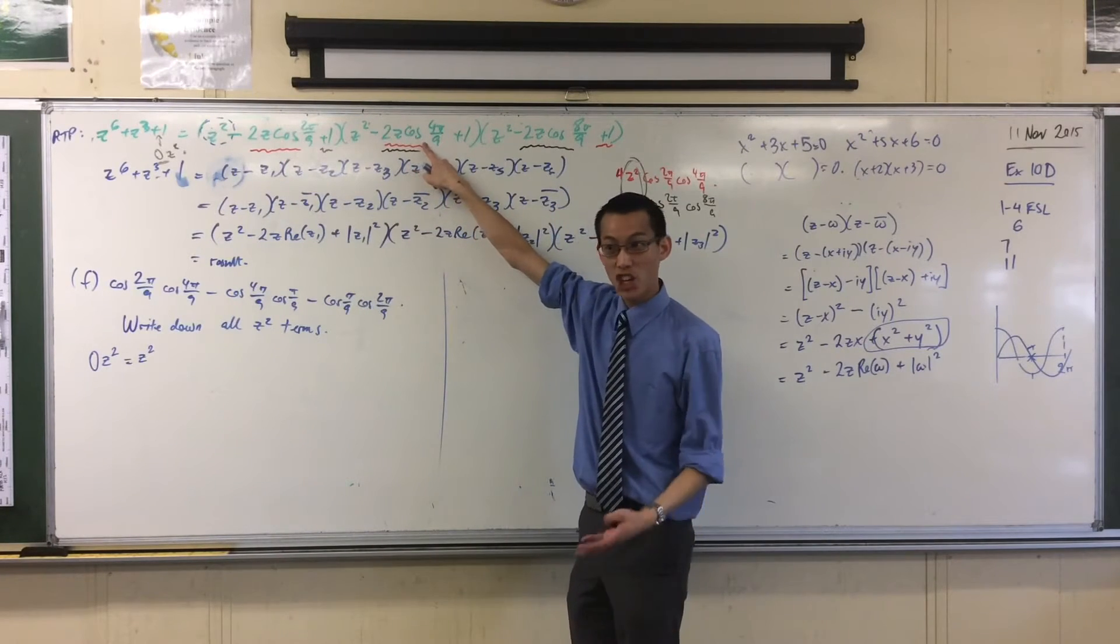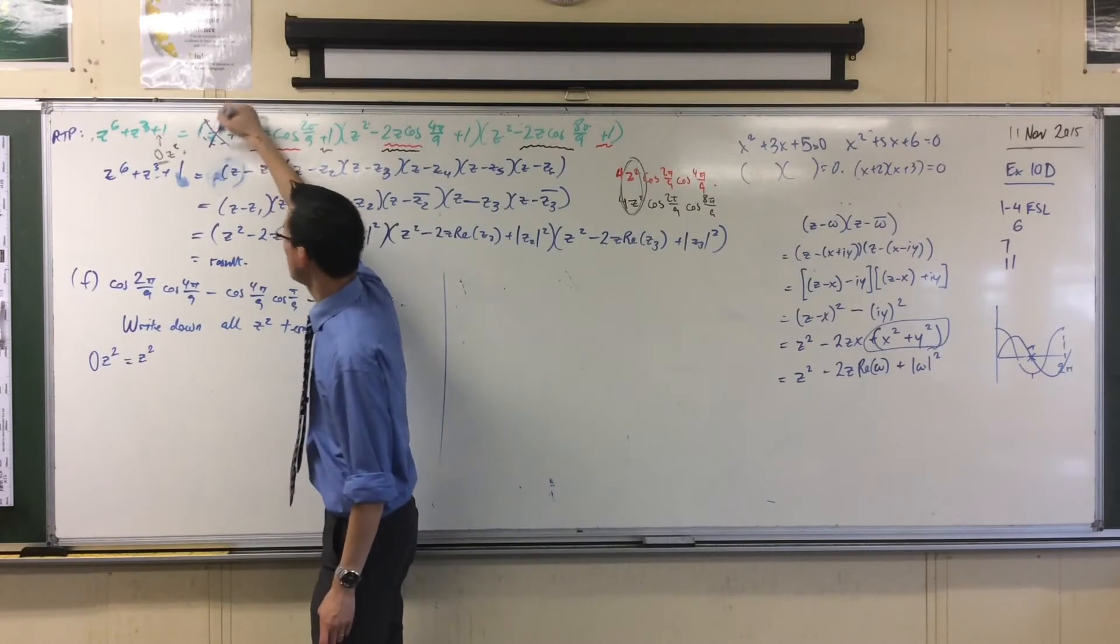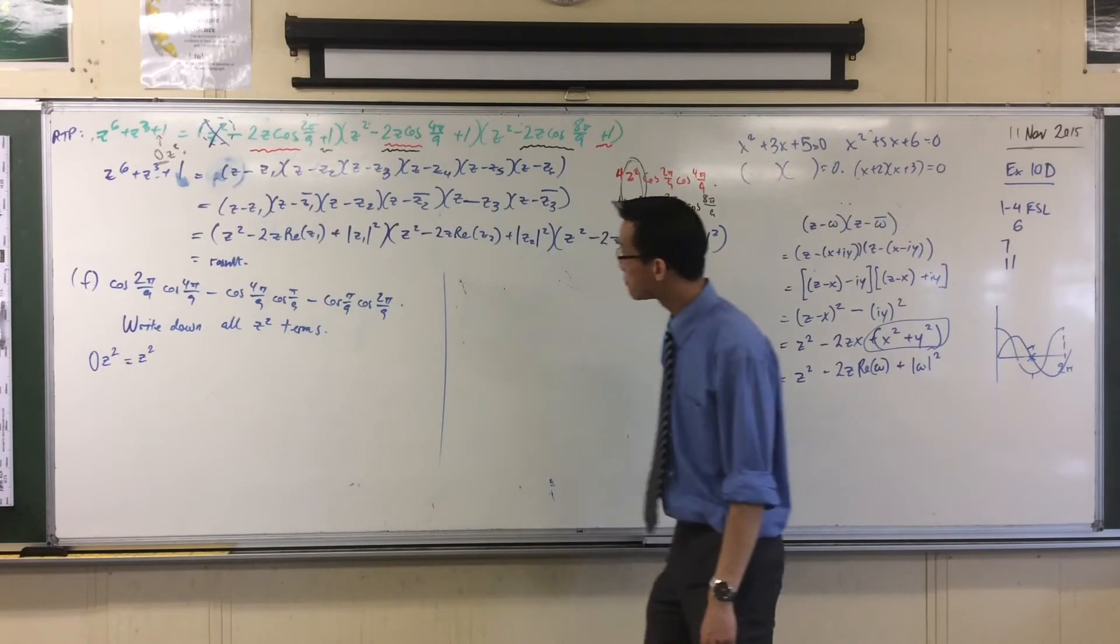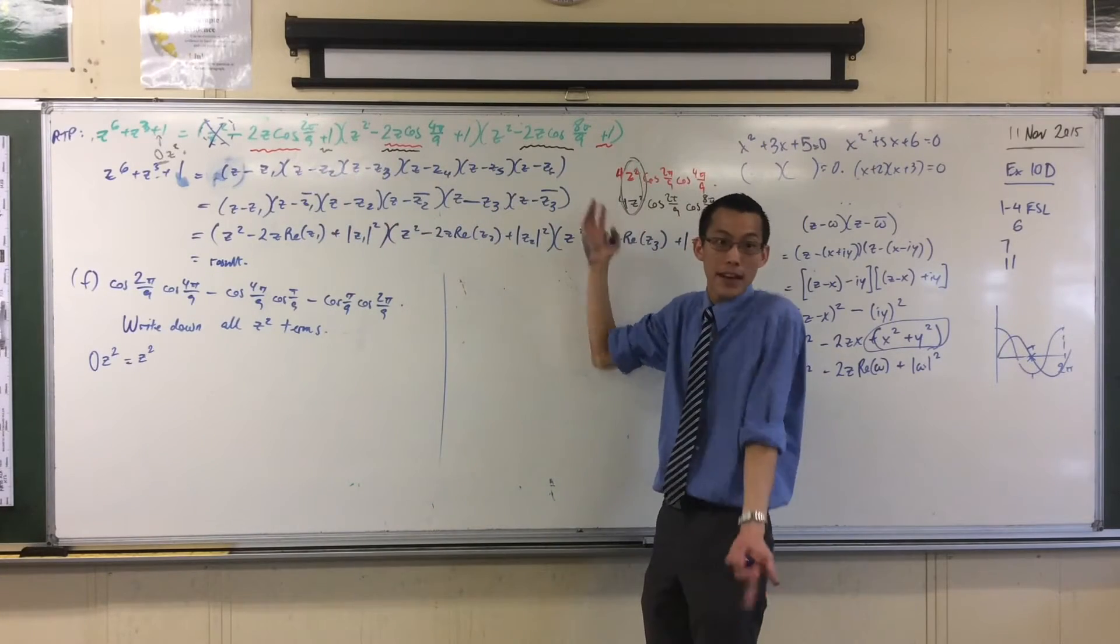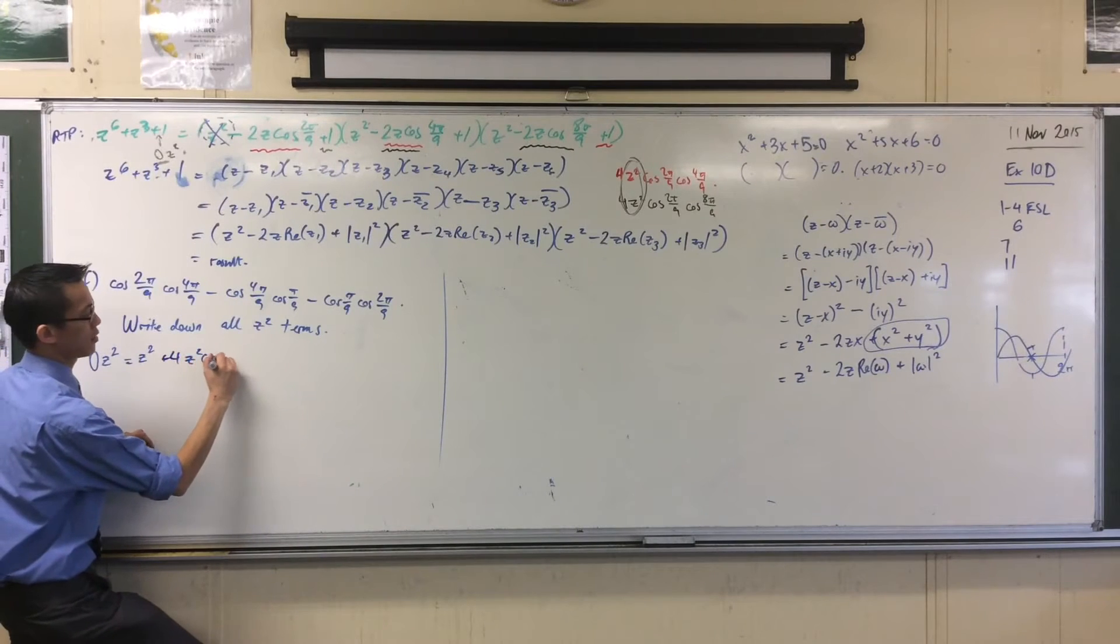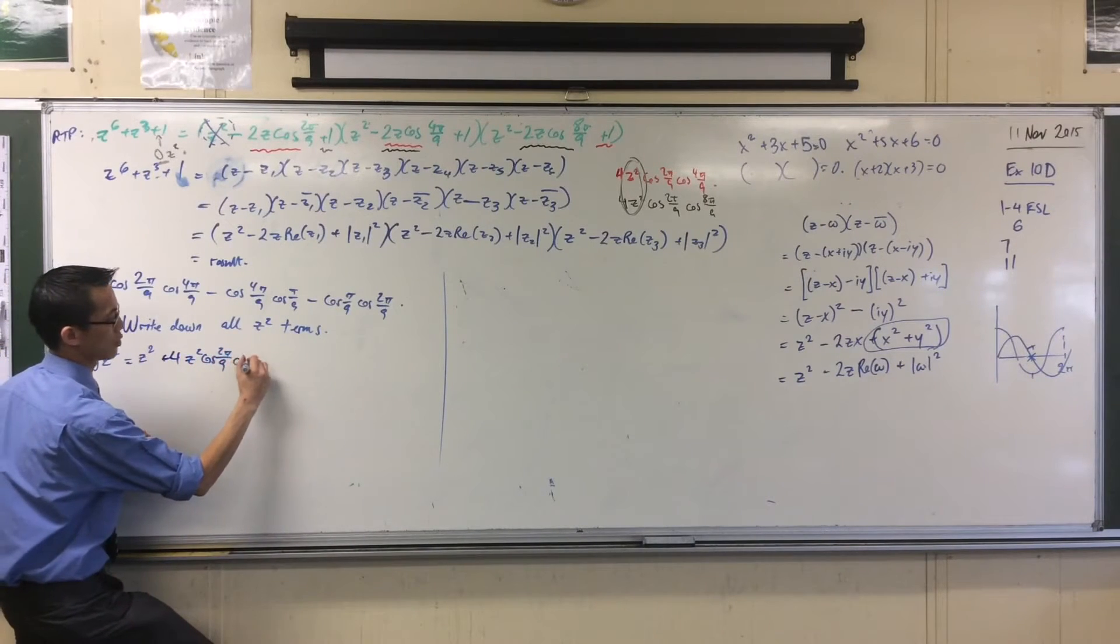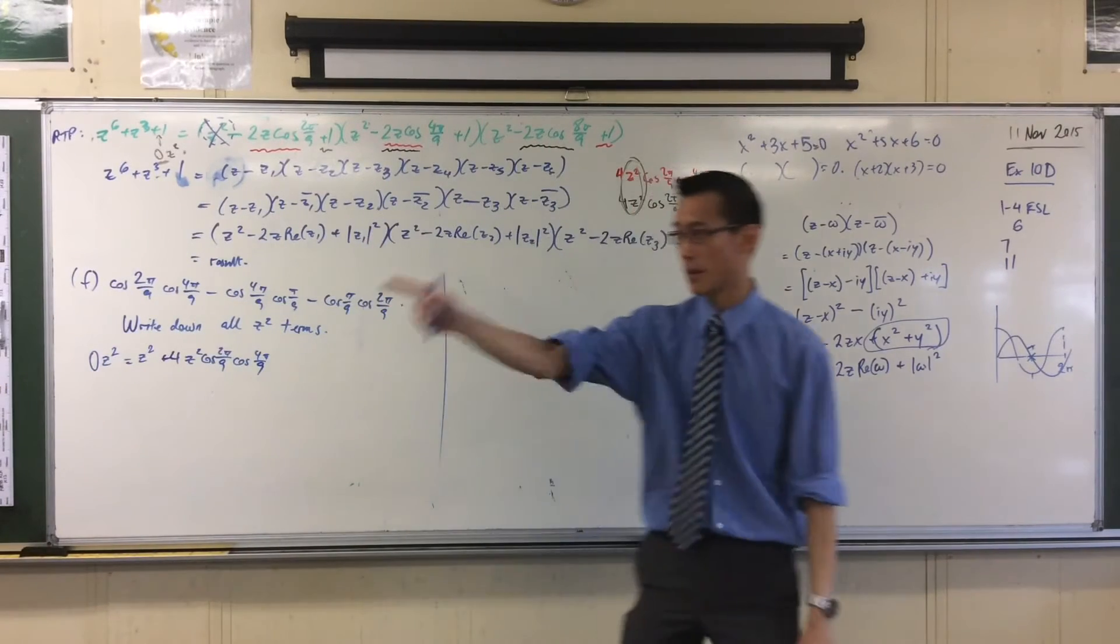If I multiply this by, say, this, I'll get z cubed, and again, I'm out. So, this guy is not useful to me anymore. Does that make sense? But then I move on to the next one, and this one, I'll do the red pairing. That's, in fact, the first one that I see. So, I've got plus four z squared cos the first angle cos the second angle. There you go. There's a second z squared term I see.